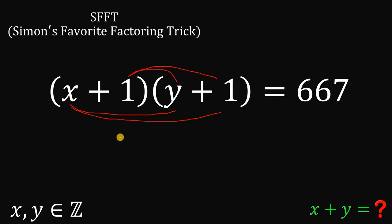Now, since we're looking for integer values for x and y, let's factor 667. Now, take note, 667 can be factored as 23 times 29.